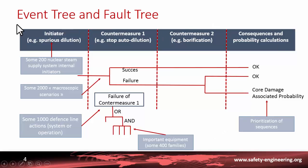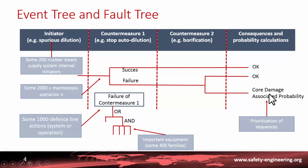This is a schematic view of probabilistic safety assessment, which can give, by calculating all the initiators, the global probability of unwanted consequences. It also provides the possibility to prioritize the various sequences, to look at those which are the most probable, and of course to take additional measures to reduce the probability of the most important sequences.